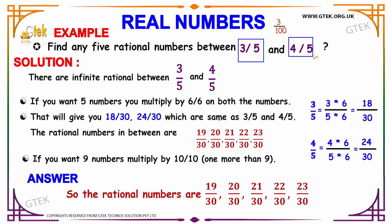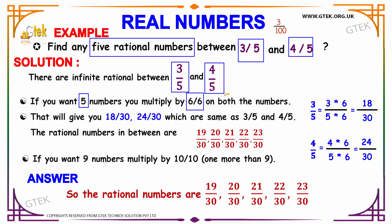Before we solve these kinds of questions, we must have an idea of how to approach them. Since we need to find 5 rational numbers, we must keep 5 in mind. If we want 5 numbers, we multiply by 6/6 on both numbers — in terms of numerator and denominator. If we need to find 6 numbers, then we multiply by 7/7. For 7 or 8 numbers and so on, the value gets incremented and that incremented value is directly multiplied as both denominator and numerator.